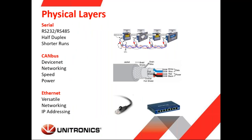Let's dive into communications. First, we're going to take a look at physical layers. What I mean by physical layers is your physical means of connecting one device to another or connecting within a network of devices. Some of the physical layers that we're going to cover today are serial, CAN bus, and Ethernet.